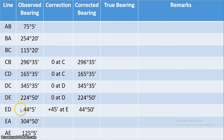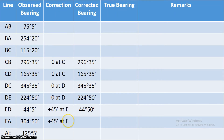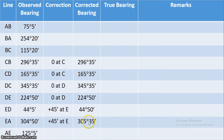The correction at station E is +45 minutes. This correction applies to all readings taken from station E. So for line EA, the observed bearing of 304 degrees 50 minutes gets +45 minutes correction, giving a corrected bearing of 305 degrees 35 minutes.